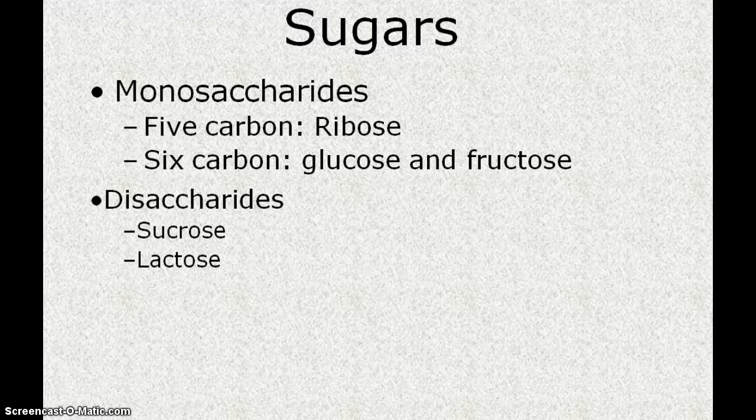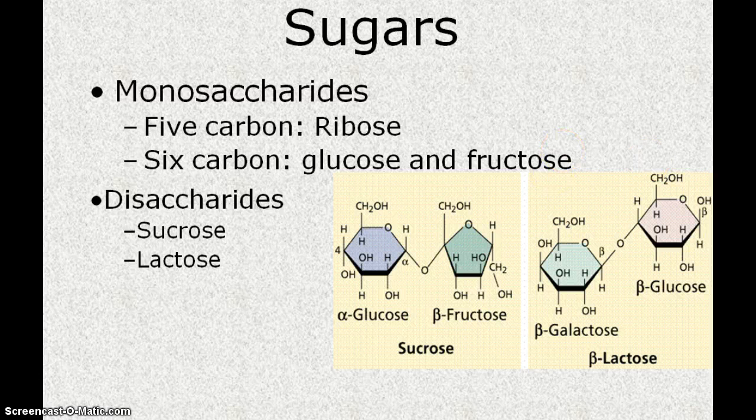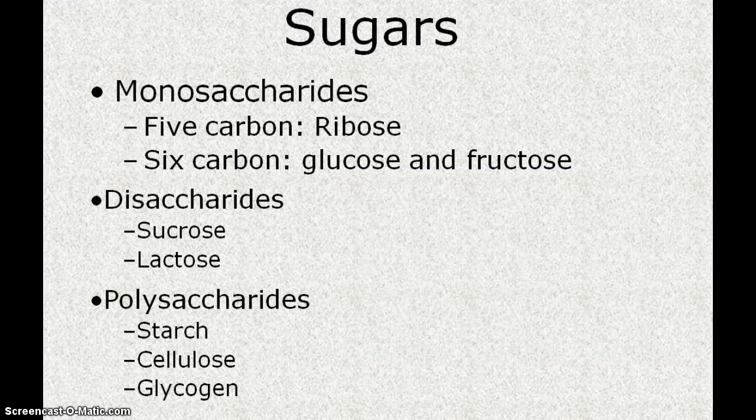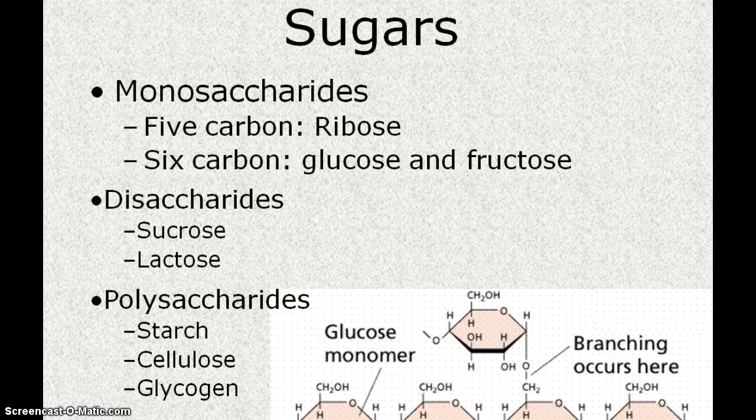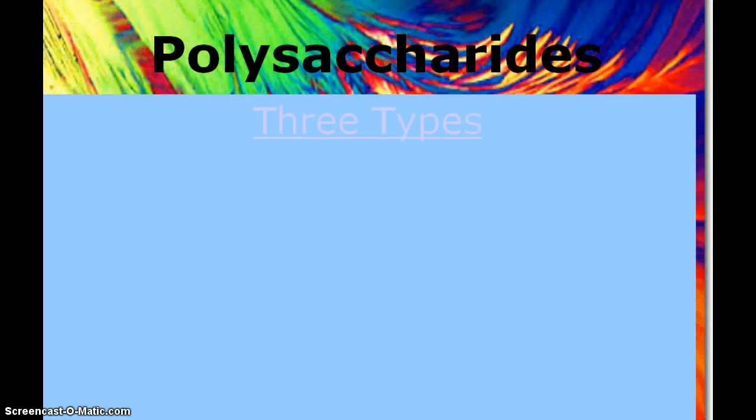And polysaccharides are going to be in the form of either starches, cellulose or glycogen. The important thing about polysaccharides is they just hold so many more bonds and they can carry a lot more energy or provide a lot more structure in that way. So the three main types of polysaccharides are right here.